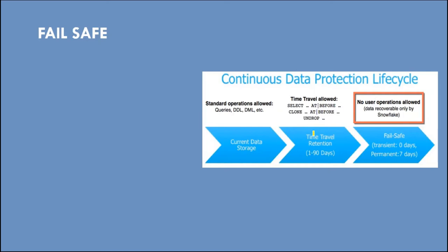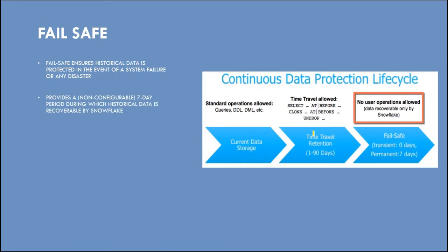Failsafe ensures historical data is protected in the event of a system failure or any disaster. It provides a non-configurable seven-day period during which historical data is recoverable by Snowflake only. User interactions are not allowed — you cannot perform any operations in the failsafe zone. Failsafe period starts immediately after the time travel retention period ends.